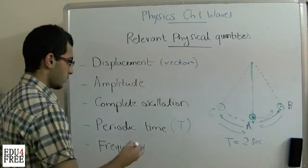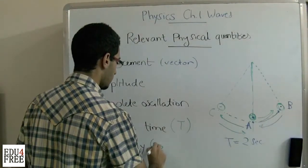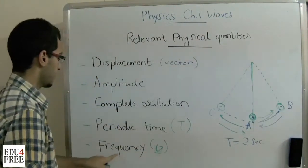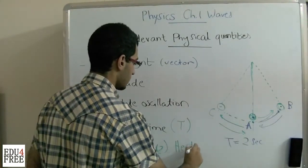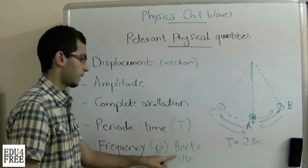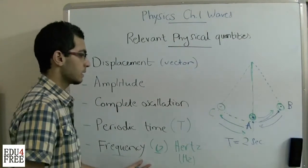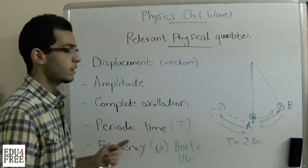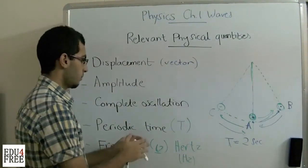Frequency is referred to as mu — there's a Latin letter mu, written like that. The unit of frequency is Hz — Hz for short. The frequency is the number of complete oscillations in one second.